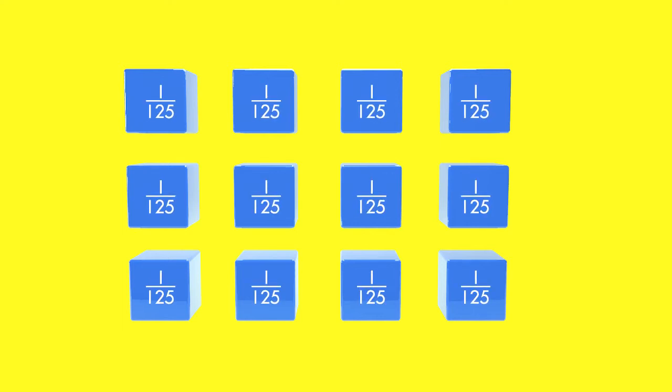This prism contains three layers of cubes, and each layer contains twelve cubes, each with a volume of one one-hundred-twenty-fifth of a cubic inch. To find the volume of one layer, add up the volume of the individual cubes in that layer.